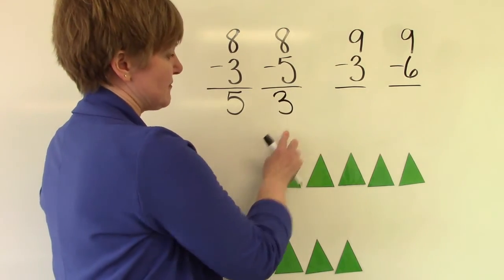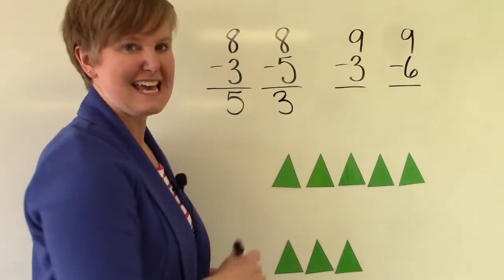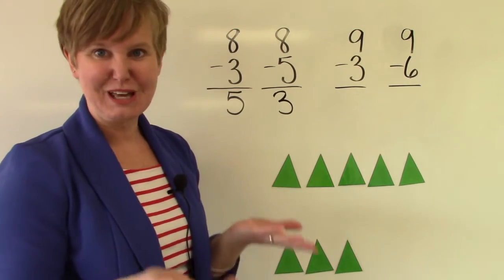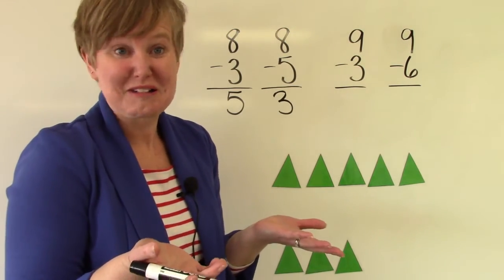Three plus five is eight. And so when we take part of them away, the answer is just going to be the other part.